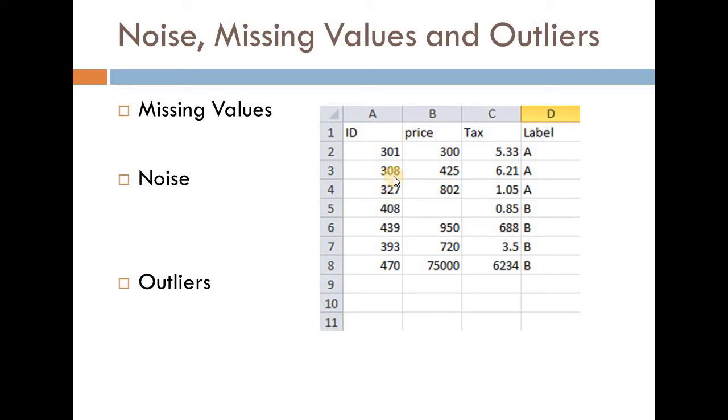Now in this data, missing values are the ones for which no value is being provided like we can see over here. This cell does not have the price value for the product that has got ID 408. Missing values can be easily identified, however the next problem is how to deal with it.